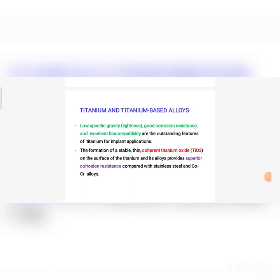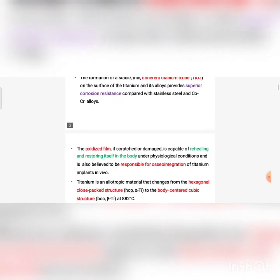Now we look at titanium and titanium-based alloys. The main advantage is corrosion resistance. Titanium has low specific gravity and excellent biocompatibility, which is the main feature a biomaterial should have. The formation of a stable, thin, coherent titanium oxide layer on the surface of titanium and its alloys provides superior corrosion resistance compared with stainless steel and cobalt-chromium alloys.